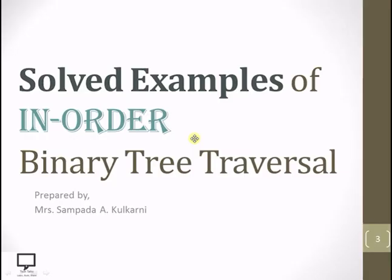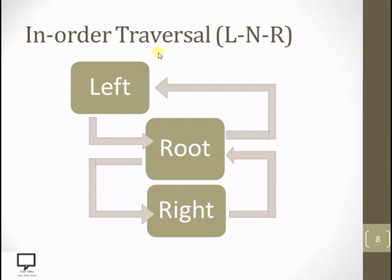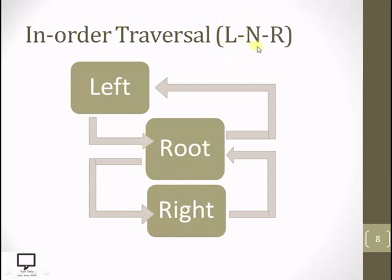I have already explained this concept in detail in the introduction video. In short: start with the root node and check whether it has a left child. If it does, step down to the left and make it the new root. Repeat this loop continuously while the current root has a left child. If not, check for a right child, make it root, and again check for a left child. Continuously follow the sequence: left, root, right.